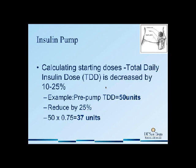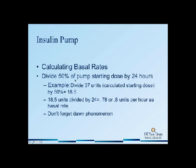As an example, I have calculated a pre-pump total daily dose for a patient of about 50 units. I then decrease that dose by about 10 to 25%, which gives us about 37 units in this example. To calculate the basal rate, I divide that insulin dose by 50% and further divide that 50% by 24 hours. In our example, we calculate 37 units divided by 50%, which gives you 18.5 units, and divide that by 24 hours, which gives you about 0.77 units per hour as a basal rate.